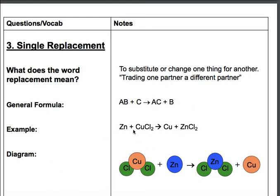If you look at the example, you'll see zinc here. So zinc, if you mix it with copper chloride, actually is able to boot the copper out. And then what you get is you get copper and you get zinc chloride.